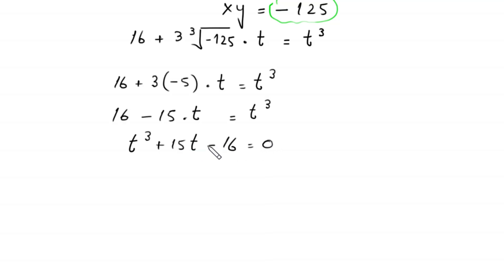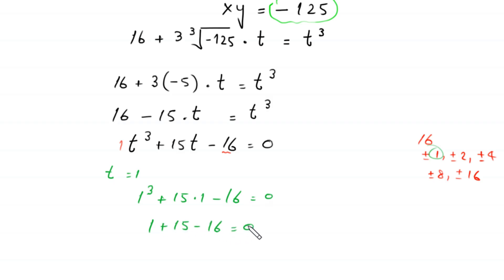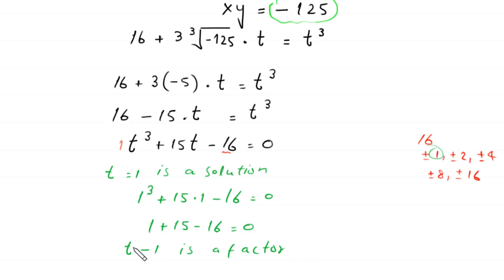This is a cubic equation. Dividing the constant 16 by the leading coefficient 1, we get 16. The factors of 16 include plus or minus 1, 2, 4, 8, and 16. Testing t equals 1: 1 cubed plus 15 times 1 minus 16 equals 1 plus 15 minus 16 equals 0. So t equals 1 is a solution, meaning (t minus 1) is a factor.